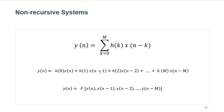All causal LTI systems defined by linear convolution will be non-recursive systems. These systems do not use any feedback from the output — they depend completely on previous inputs only, with no reference to previous outputs. Here m is the number of past input samples in memory, and if m is large, computation becomes inefficient.